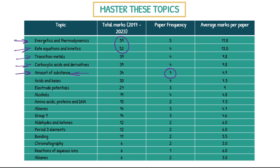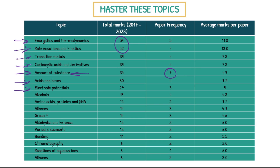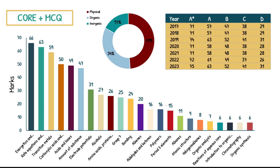Acids and bases is a super big topic for Paper 1. Electrode potentials is also huge for Paper 1, and there's a required practical for it that can pop up. All the other topics beyond there are good to learn — many of the organic topics trickle in, and group seven is probably the second best inorganic topic to learn after transition metals. Screenshot this table, send it to your mates. I'm not a psychic — I'm just analyzing the papers and thinking where I would focus my time, because I don't want to be studying 24-7.